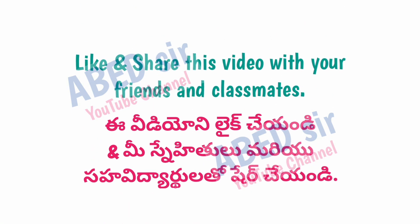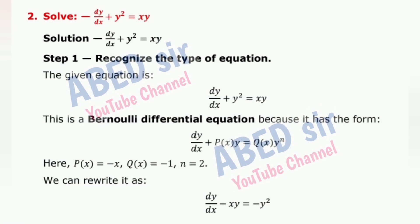Next important long question: Solve dy/dx + y² = xy. Solution, Step 1 — Recognize the type: The given equation dy/dx + y² = xy is a Bernoulli differential equation. Here P(x) = x, Q(x) = 1, n = 2. We can rewrite it as dy/dx - xy = y².